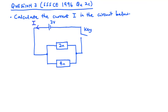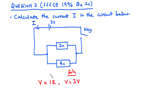Now let's solve the second question: SSCE 1996 question 2c. We have to calculate the current I in the circuit. In this circuit we have a 3 volt voltage source, a 2 ohm resistor and a 4 ohm resistor, with current I flowing through the circuit and a key. So R1 equals 2 ohms and R2 equals 4 ohms.